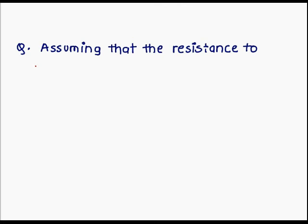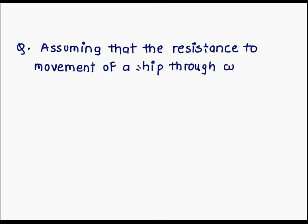The resistance to movement of a sheep through water is in the form of a square plus b square v square.